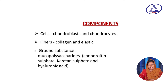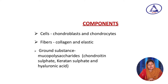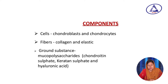Now let us discuss the components. The cells of cartilage are chondroblast and chondrocyte — 'chondro' means cartilage, 'blast' refers to the young cell, and 'cyte' means mature cell. The fibers consist of collagen fiber and elastic fiber; collagen fiber is present in all three types of cartilage, while elastic fiber is present in specific types. The ground substance consists of mucopolysaccharides — that means chondroitin sulfate, keratan sulfate, hyaluronic acid — and proteoglycan aggregates.